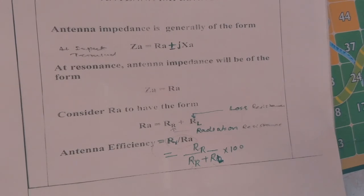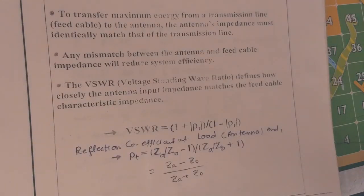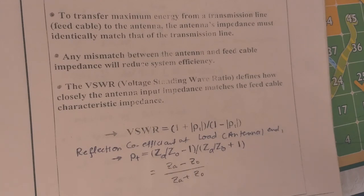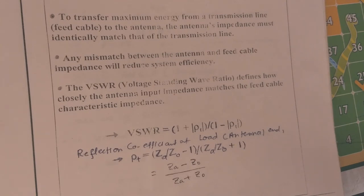To transfer maximum energy from a transmission line feed cable to the antenna, the antenna impedance must identically match that of the transmission line. Our antenna works on the maximum power transfer theorem, so antenna impedance should equal the cable impedance. Any mismatch between antenna and feed cable impedance will reduce the system efficiency — if there is a mismatch, the transmitted power will be reduced.